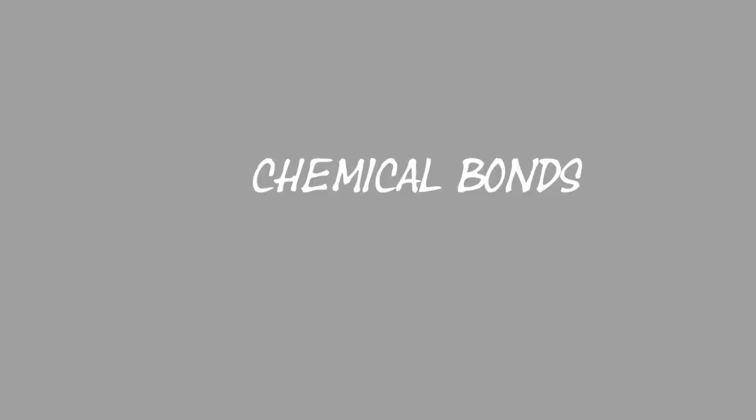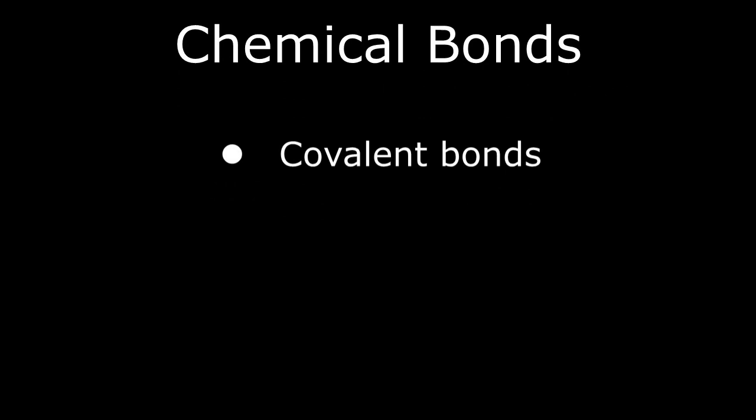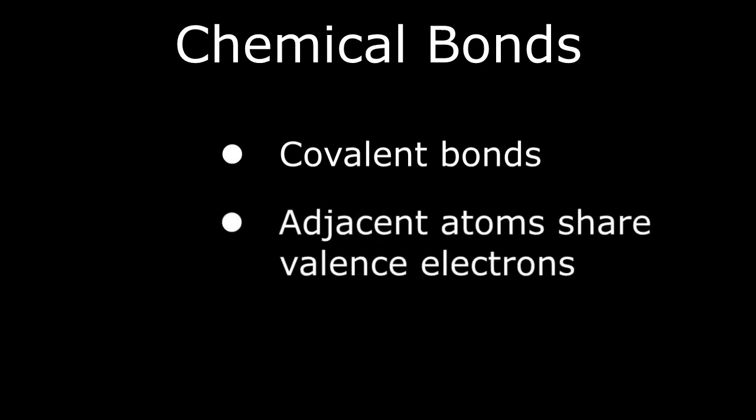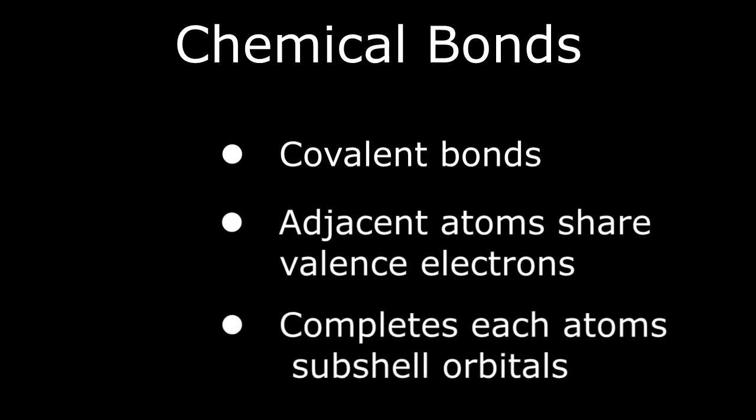The type of bonds that we are all familiar with from our high school chemistry class are called covalent bonds, where each of the atoms shares one of its valence electrons with its atomic neighbor, allowing each to complete their valence subshells for molecular stability.